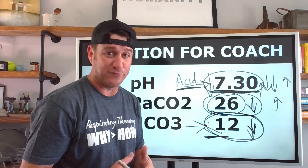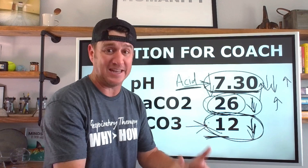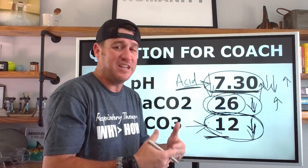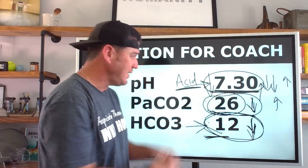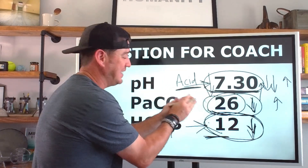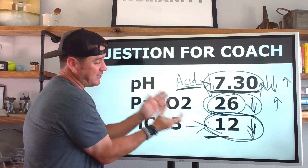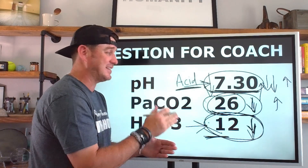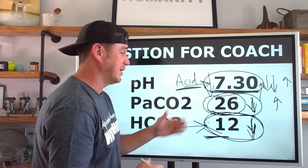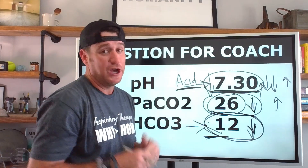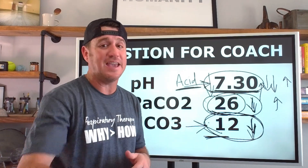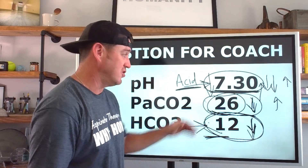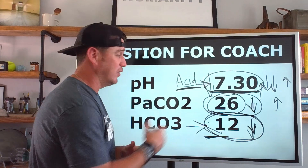It's a metabolic acidosis because we're acidotic and the bicarb is the problem. It's partially compensated because CO2 has decreased, but we haven't gotten to a state of full compensation. If we were at 7.35, then we would be fully compensated. As it stands, we are in a partially compensated state. Sometimes people refer to this as just a compensating state — we're compensating but haven't achieved full compensation. Partially compensated metabolic acidosis is actually a common blood gas you'll see associated with DKA, also known as diabetic ketoacidosis.